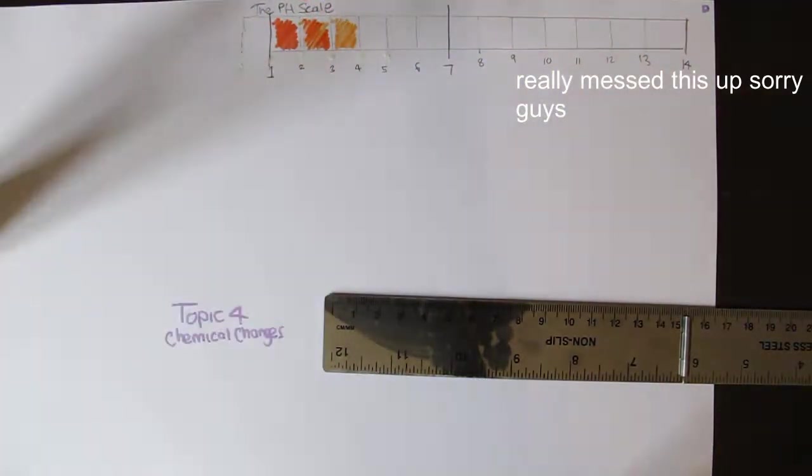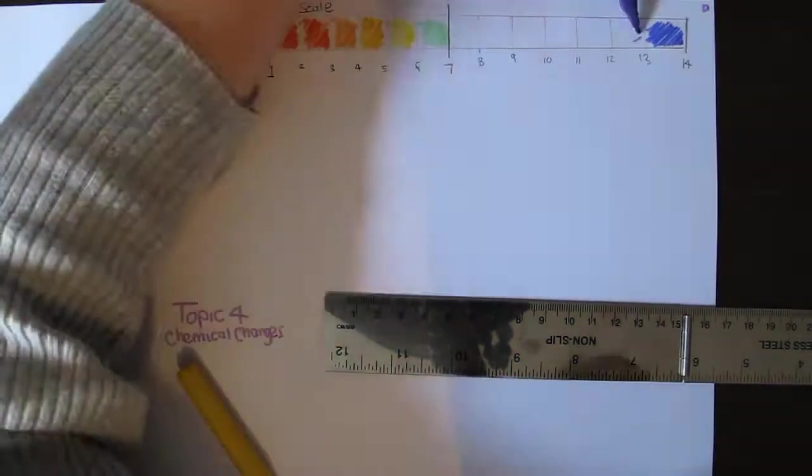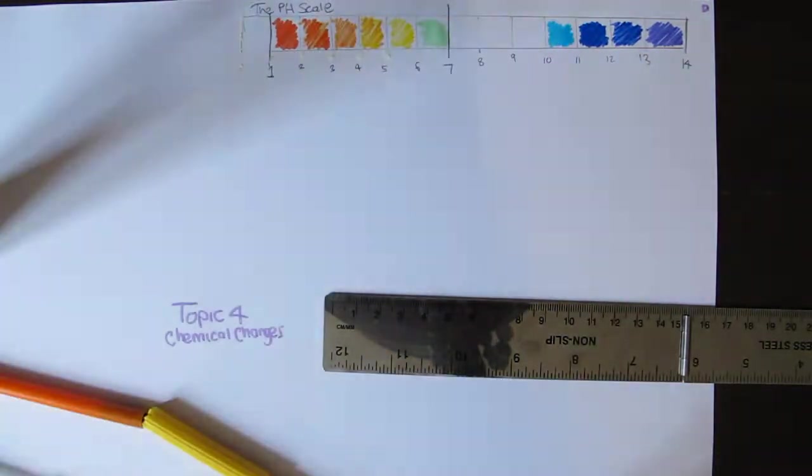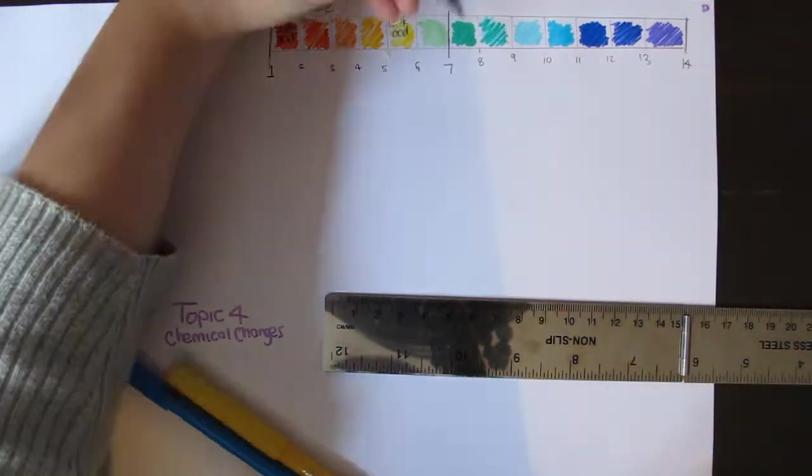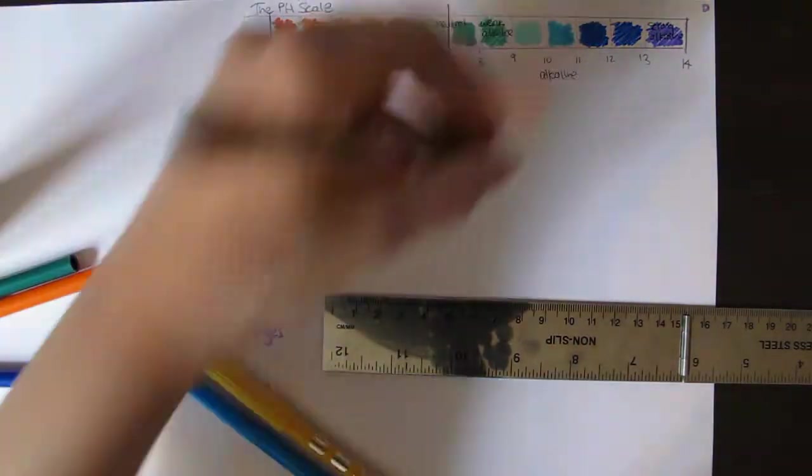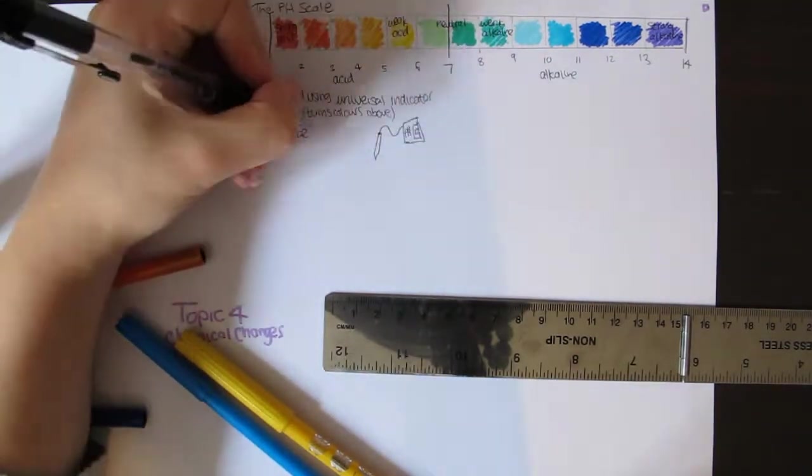The pH of a solution can be measured by an indicator that changes color depending on the pH, for example universal indicator turns the colors on the table above. The pH can also be measured by a probe that you put in the solution. It tells you the numerical value. This is very accurate.